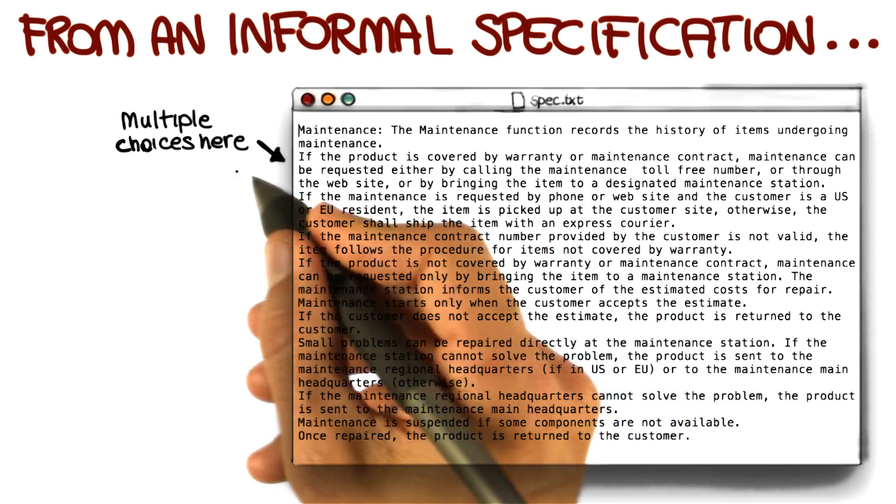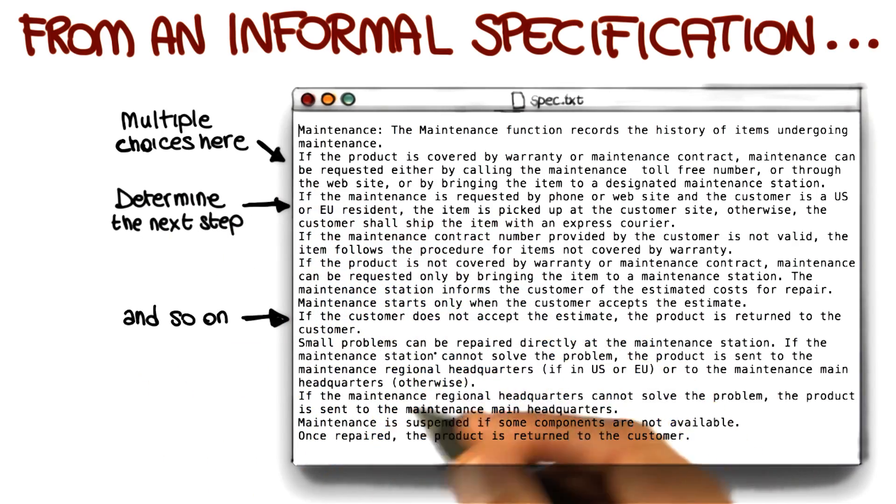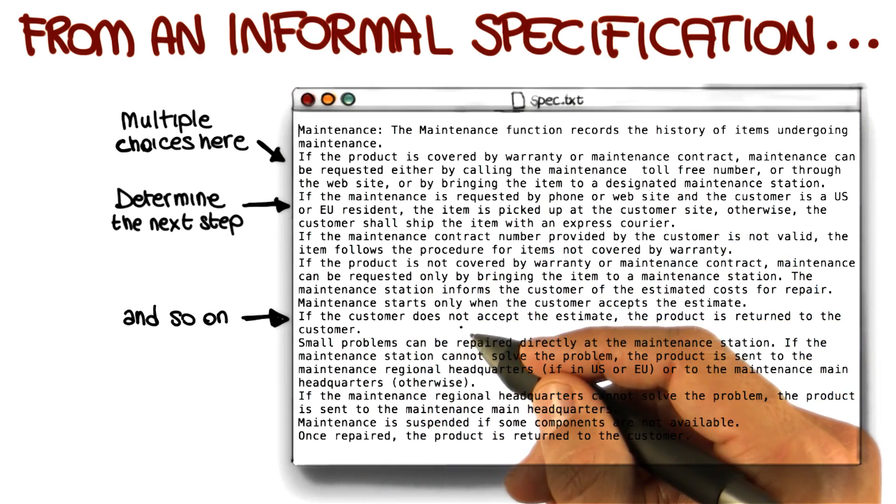So we have multiple choices here. Here we determine the next steps, and so on. All we have to do is go through this process, identify these cases, and then build a machine that represents these cases.